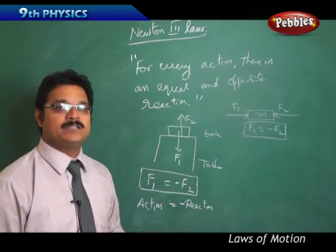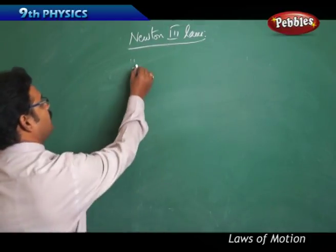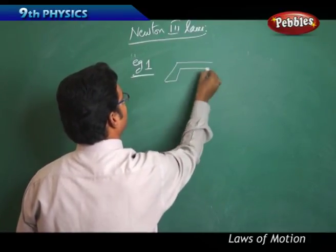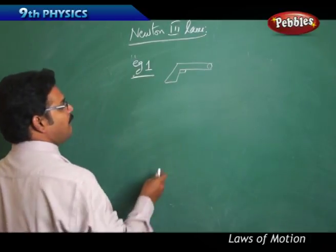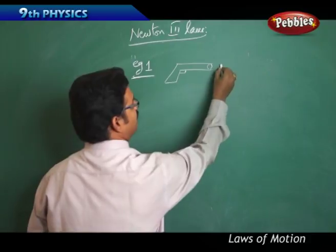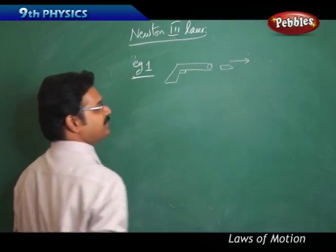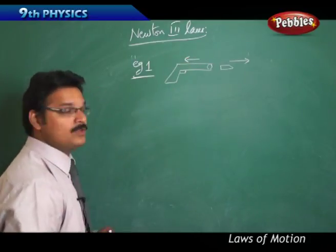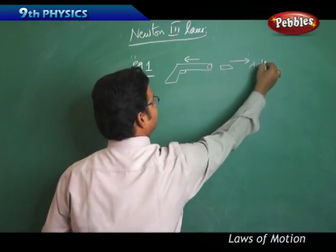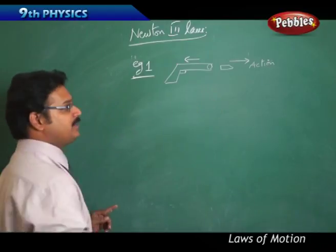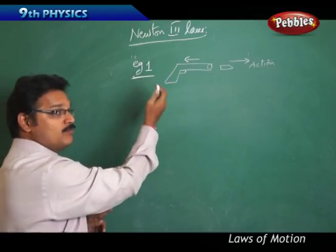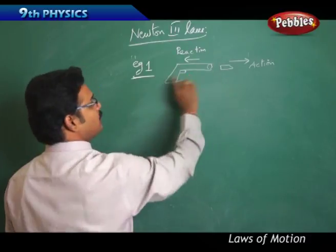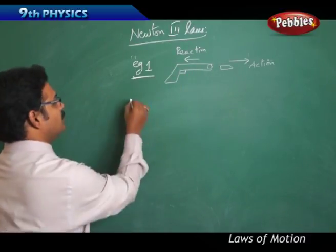Now let us discuss some examples where you can apply Newton's third law. Example 1: there is a gun, and when the trigger is pressed, a bullet is fired and moves in the forward direction. You experience that the gun moves in the backward direction. So the bullet firing and moving forward is the action, and the gun moving backward — called recoil — is the reaction. This action-reaction pair is a Newton's third law example.